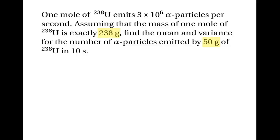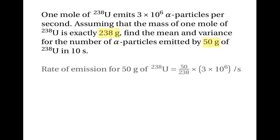The first thing to notice is that the question is telling us the rate of emission for 238 grams — we're told that 238 grams of uranium emit 3 million alpha particles per second. But we need to know about 50 grams of uranium-238, so the rate of decay for 50 grams will be lower. The rate of emission for 50 grams of uranium is going to be 50/238 times 3 million per second, which is 150/238 × 10⁶ emissions per second.